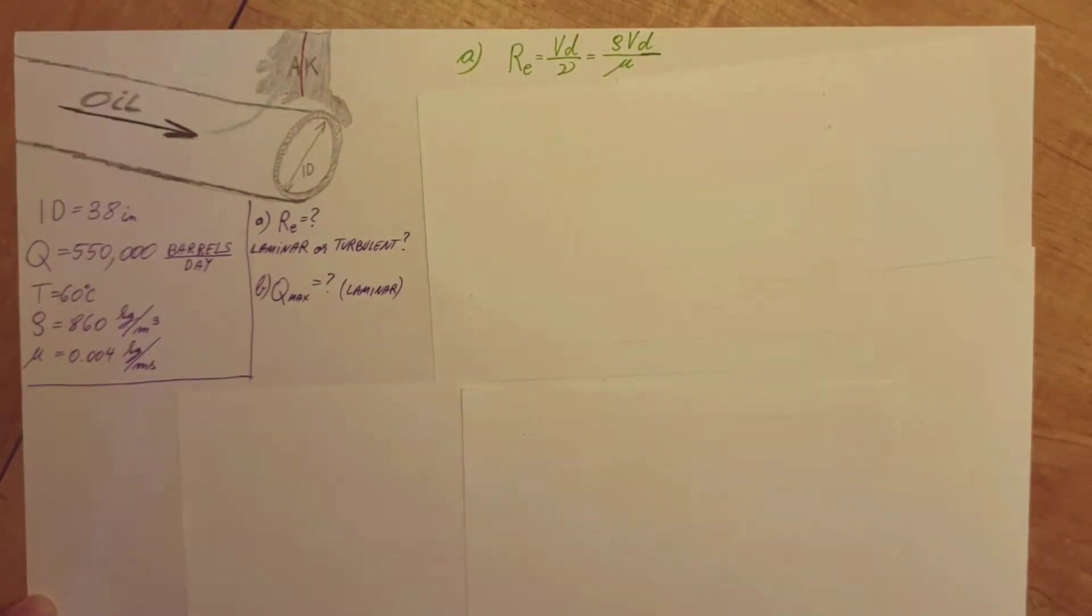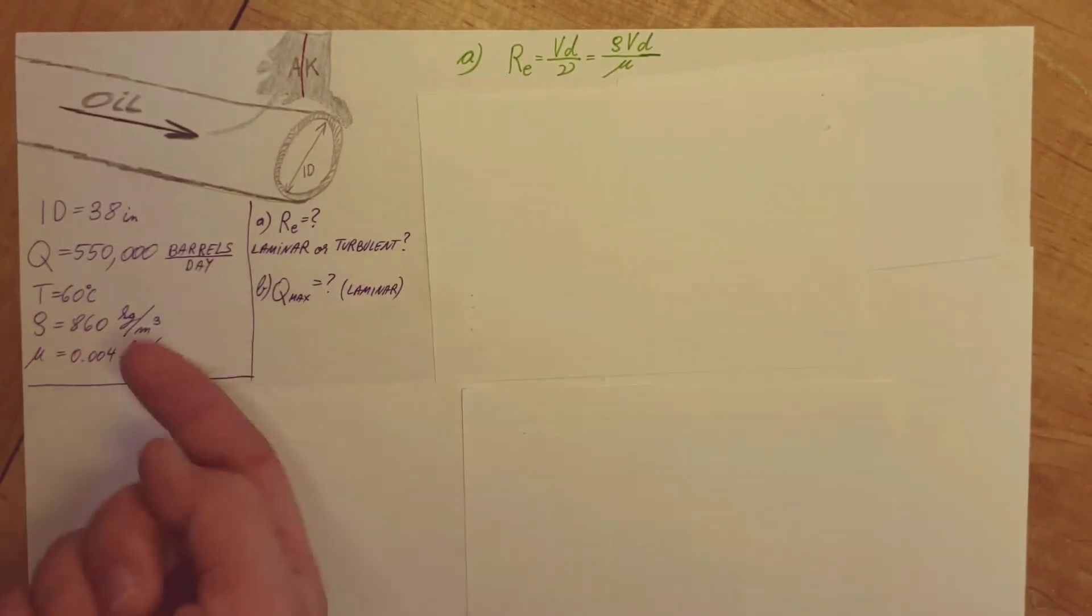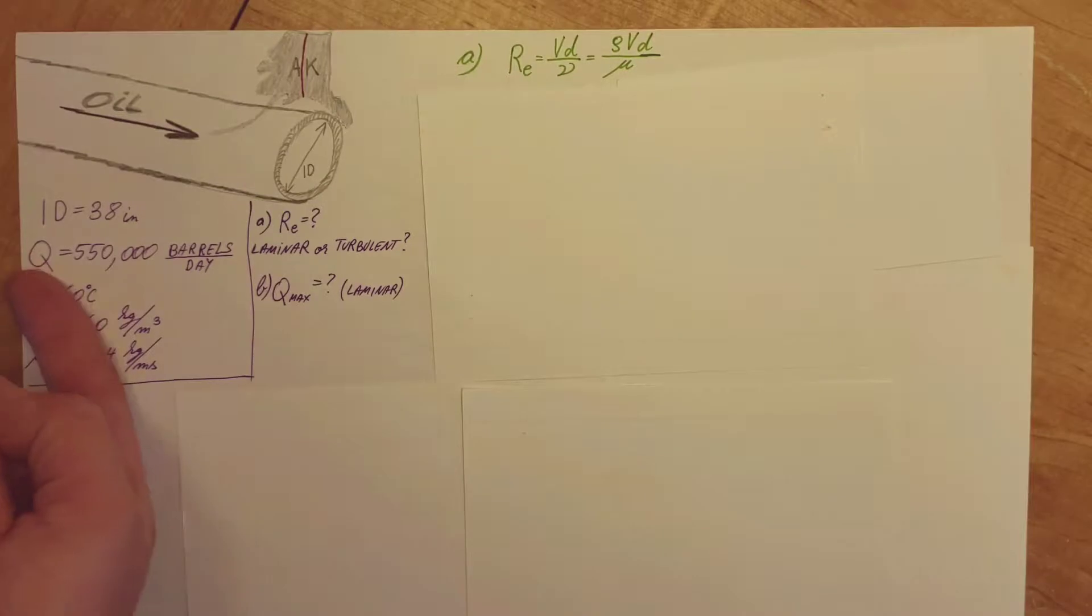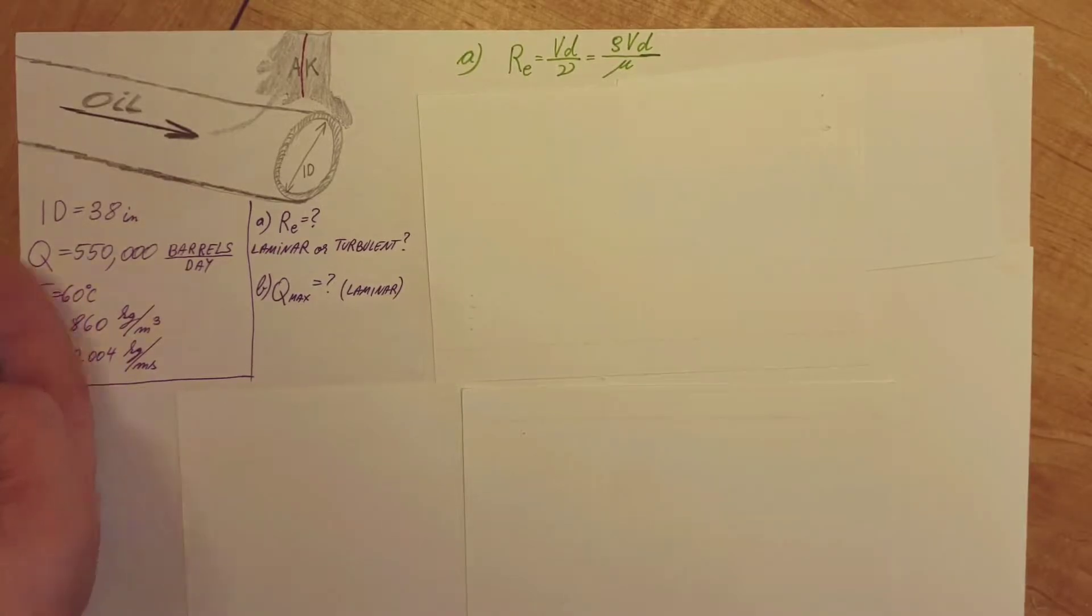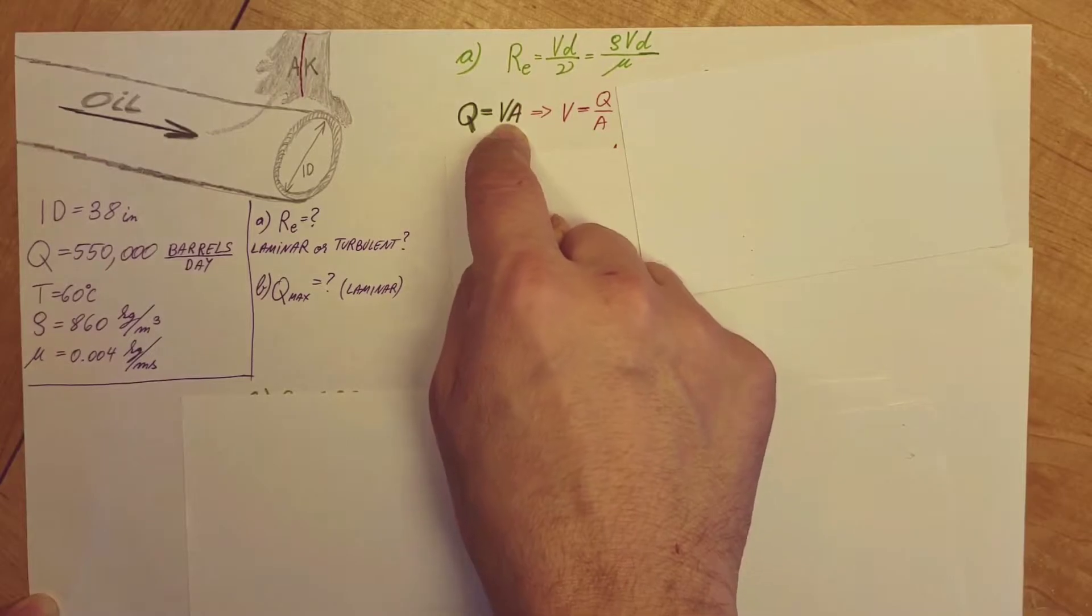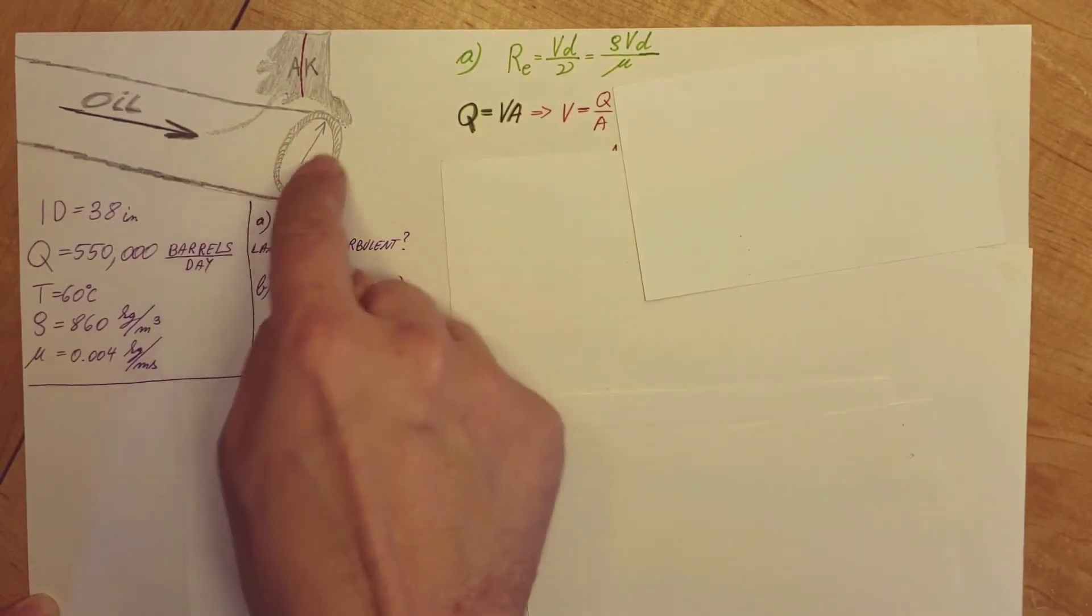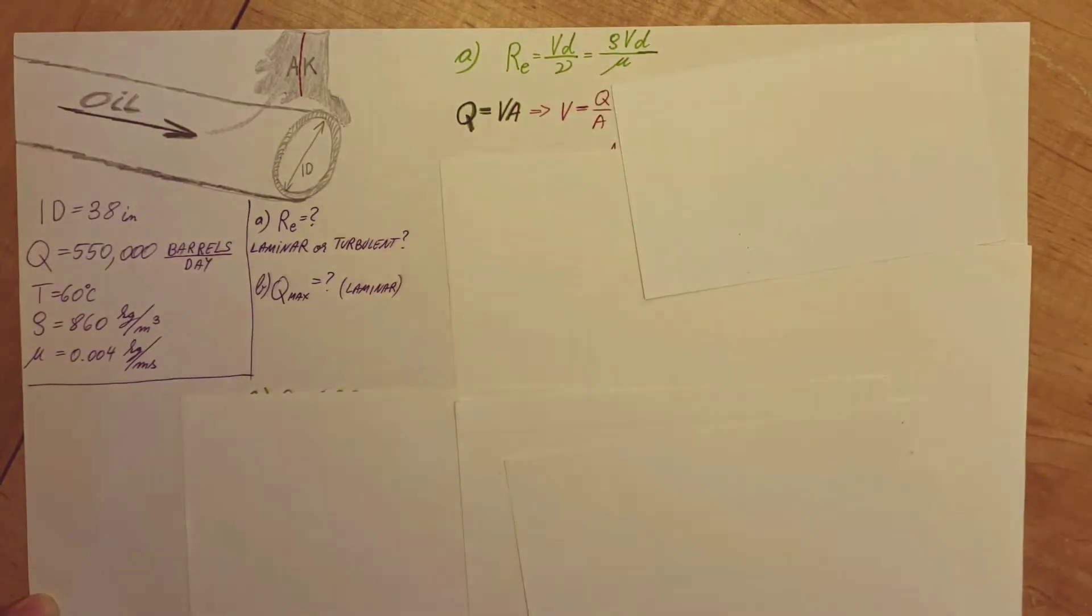Where could we get velocity from? Q is our volume flow rate. Barrels is a weird, strange volume measurement, and day is our time. Volume over time is volume flow rate. We can recognize that 550,000 barrels per day is going to be our Q. And from Q, we know that Q equals velocity times the area, the cross-sectional area. From here, we can solve for V, which equals Q over A.